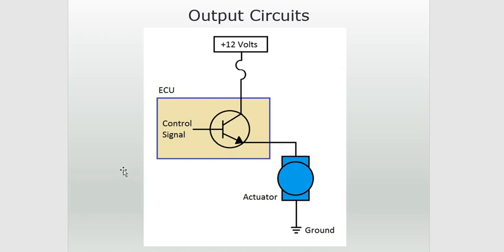Here's a basic computer output circuit. All that happens is the computer uses a transistor or a solid state switch to turn on and off this circuit. Computers are made up of transistors — the logic circuit inside a computer can be composed of billions of tiny transistors. But the transistors that are used to control output devices are unique and we call them drivers, because they're larger than typical transistors and they can handle a higher current load.